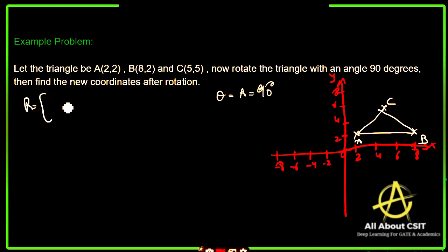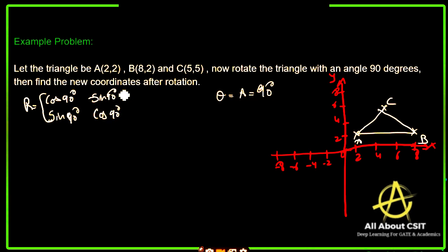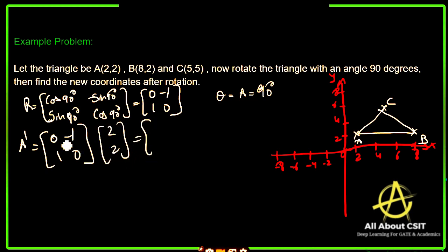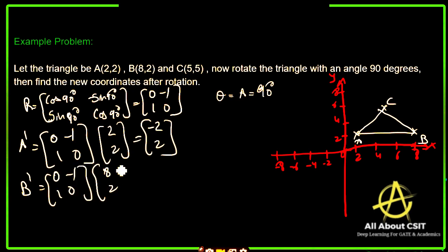First find the rotation matrix R for theta = 90 degrees: R = [cos(90°), −sin(90°); sin(90°), cos(90°)] = [0, −1; 1, 0]. Now find the new coordinates of A'. A' = R × [2, 2] = [0×2 + (−1)×2; 1×2 + 0×2] = [−2, 2]. For B', R × [8, 2] = [0×8 + (−1)×2; 1×8 + 0×2] = [−2, 8].